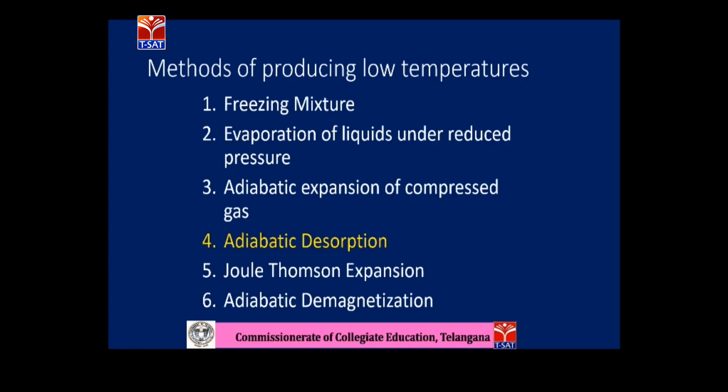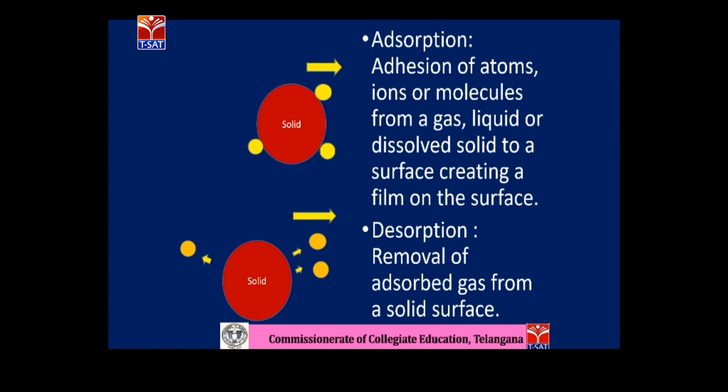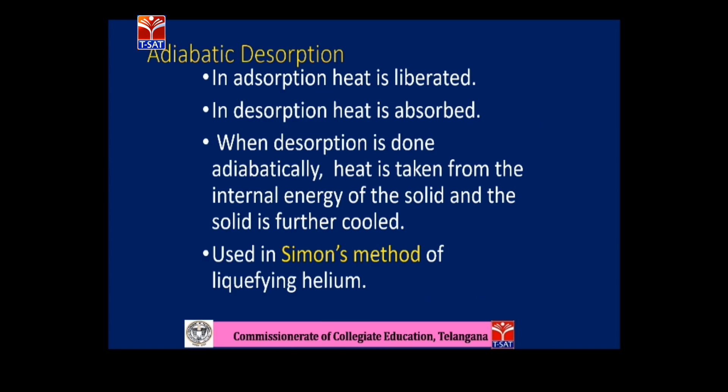The fourth method is adiabatic desorption. To understand it, first let us understand adsorption. When a solid is immersed in a liquid or gas, the molecules of the liquid or gas adhere to the solid surface, forming a thin film. This process involves liberation of heat. The opposite process is desorption, where the thin film molecules are removed from the solid surface. Desorption involves a cooling effect. When done adiabatically, the heat is taken from the internal energy of the solid, cooling it further.